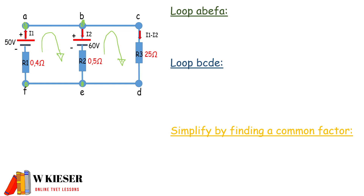For loop A-B-E-F-A, the EMF is 50 volts for the first battery. If you look at conventional current flow moving in a positive to negative direction, it's in a clockwise direction. However, the second battery's conventional current flow from positive to negative is in a negative direction. I1·R1 is in a clockwise direction — that will be positive. I2·R2 is in a clockwise direction — that will also be positive.